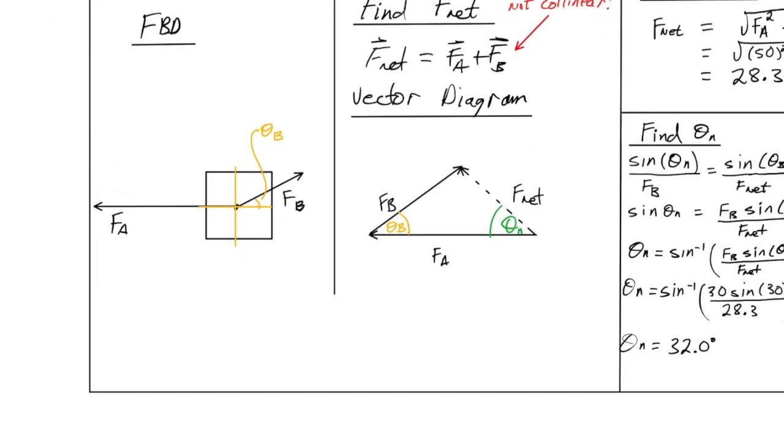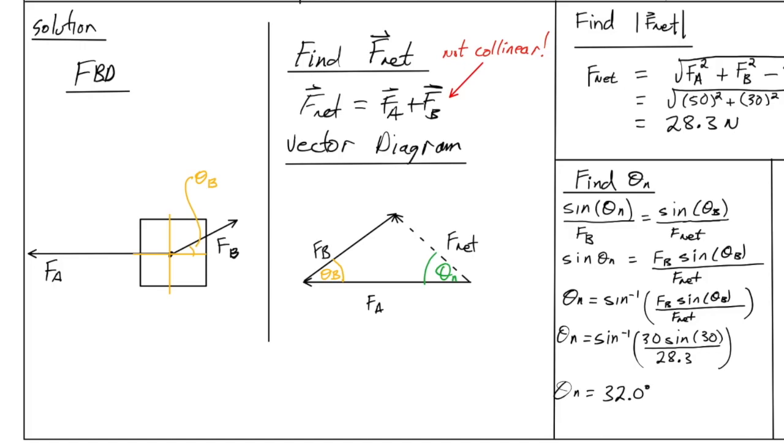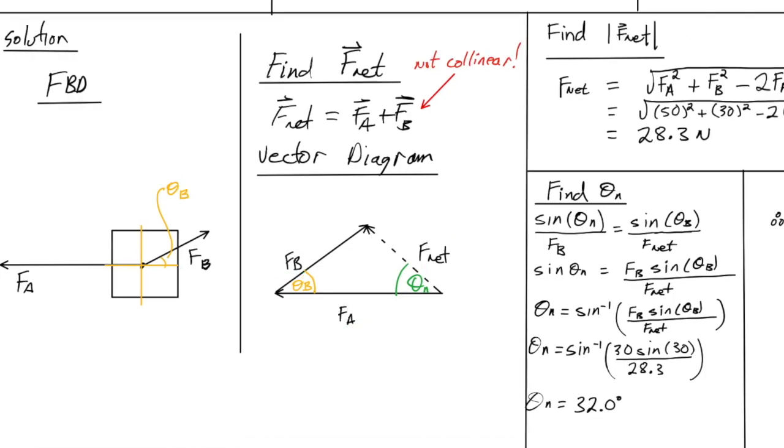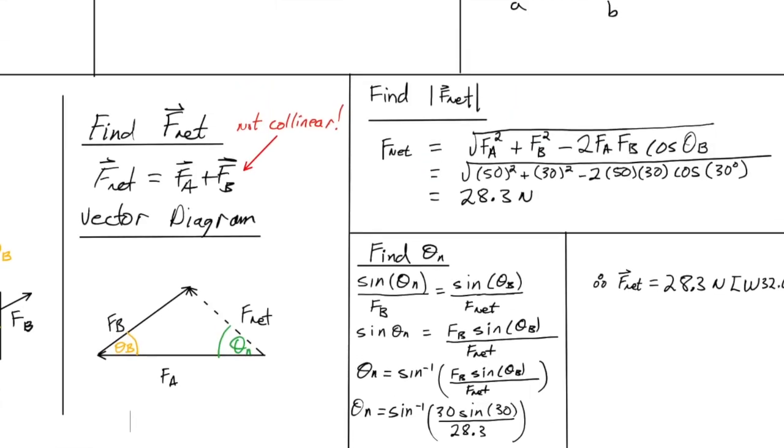And that's important when the vectors are not collinear and not playing nicely. I denoted the direction of FB as theta B, specifically here. Next, the vector equation, again, is the same as it is before. It's just FA plus FB. What changes is the geometry. When we look at the vector diagram, it's FA plus FB, and that's equal to our resultant, which is FN. So, in this case, we have to choose a different method. We can't use Pythagorean theorem. We do have the option, however, of using cosine law to solve this.